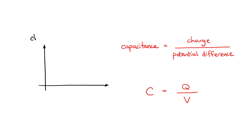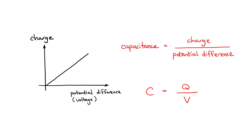If given a graph of charge against potential difference, the gradient would be equivalent to the capacitance.